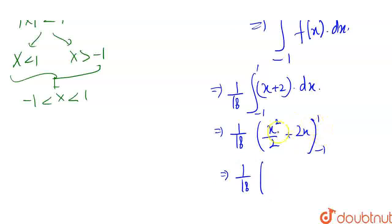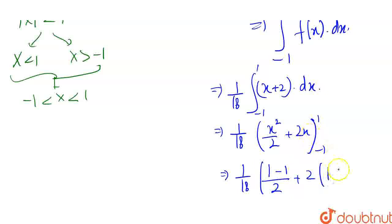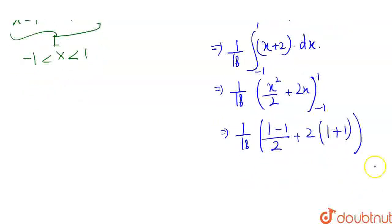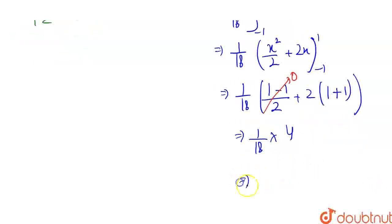Now we put in the limits. At x = 1: 1²/2 + 2(1) = 1/2 + 2. At x = minus 1: (minus 1)²/2 + 2(minus 1) = 1/2 minus 2. Subtracting, the 1/2 terms cancel, and we get 1/18 times (2 + 2) = 1/18 times 4, which equals 4/18.